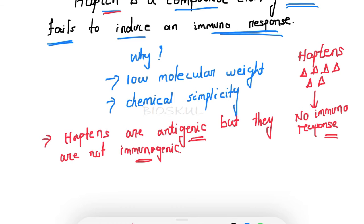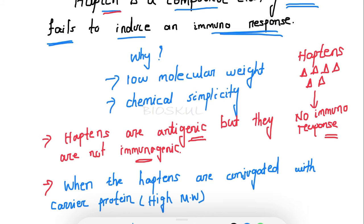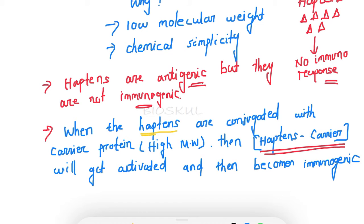By themselves, haptens are unable to induce an immune response. So when are haptens able to induce an immune response? When haptens are conjugated with a carrier protein, that hapten-carrier conjugate is able to induce an immune response and becomes immunogenic.